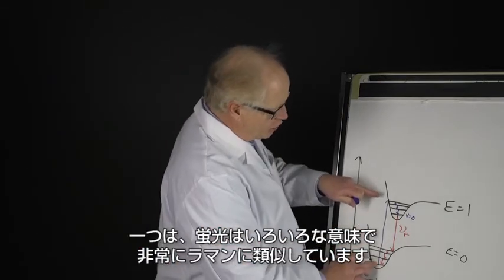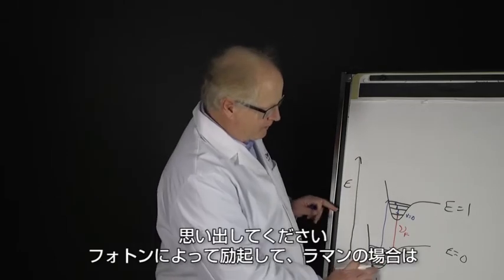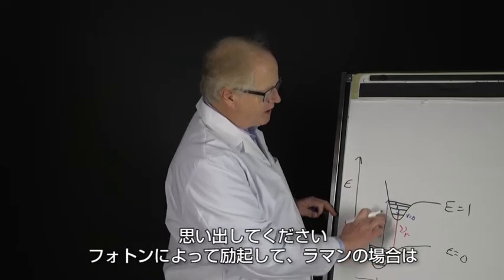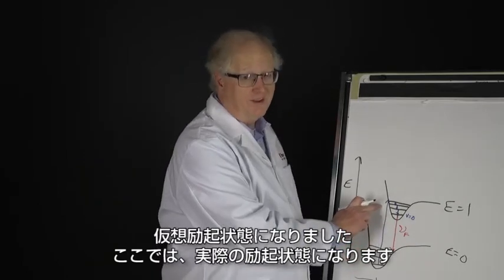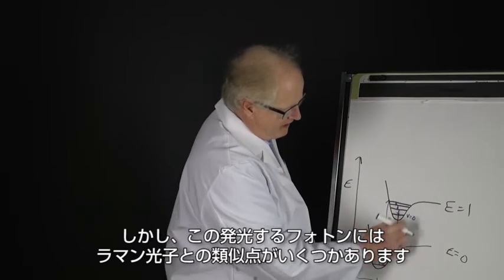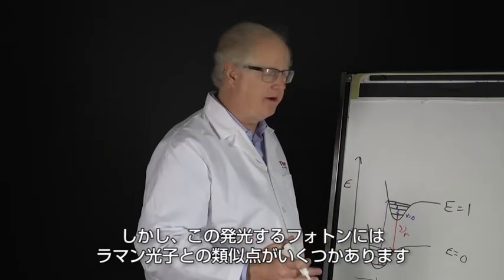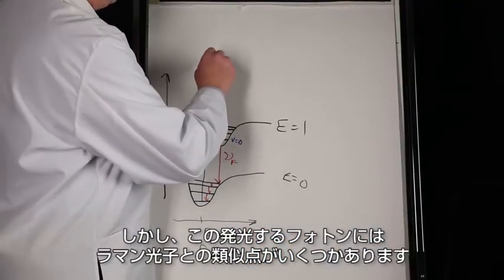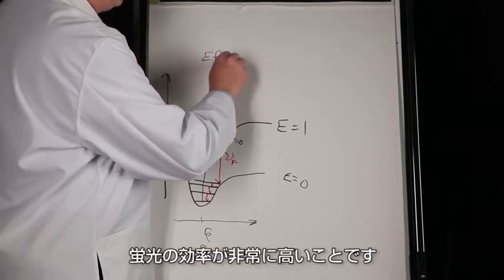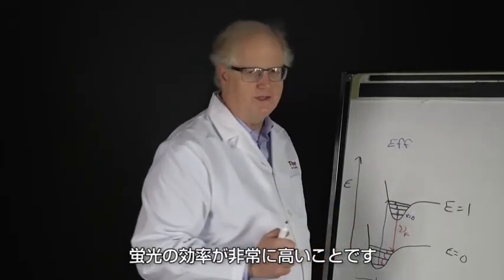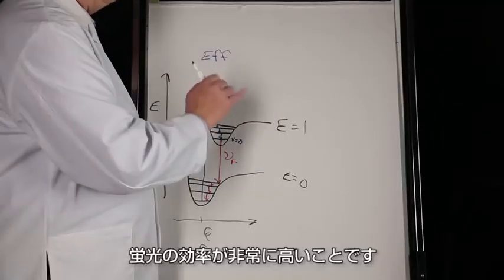Two very critical facts about fluorescence: one is it looks in many ways similar to what we drew for Raman — remember, the photon went up to a virtual state, whereas here it's going to a real state. But this emitted photon has some similarities to the Raman photon. The other key point is that the efficiency of fluorescence can be very, very high.